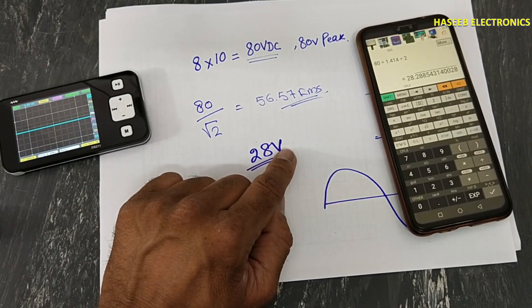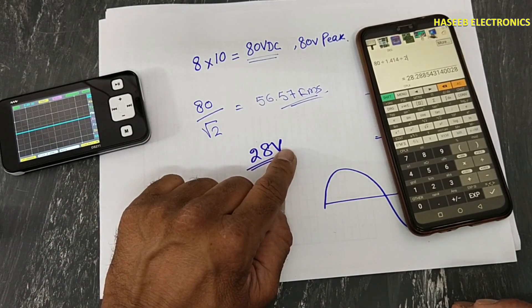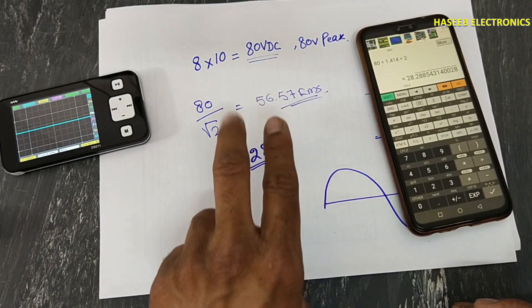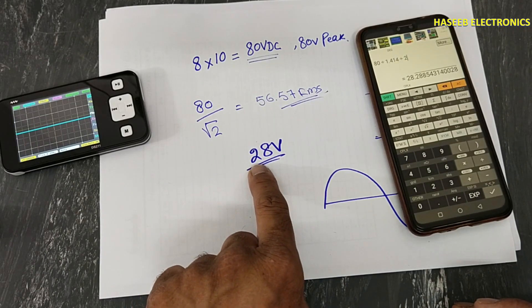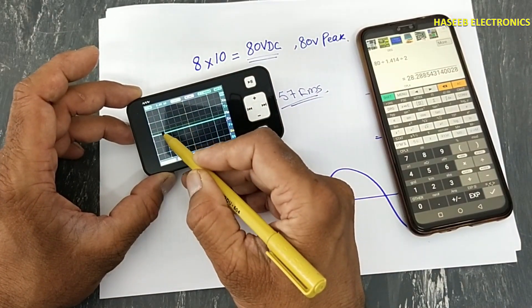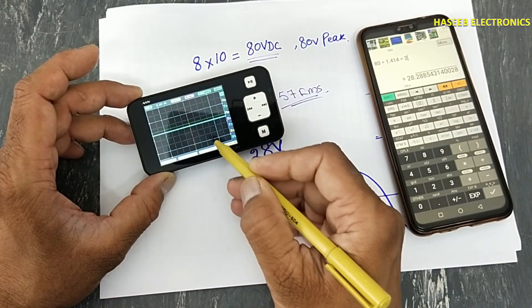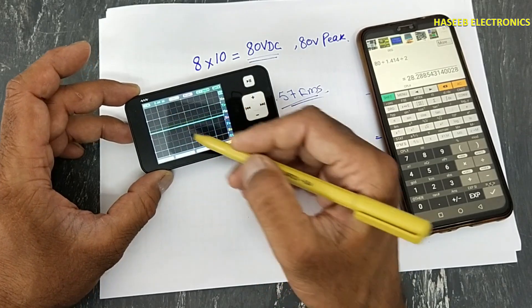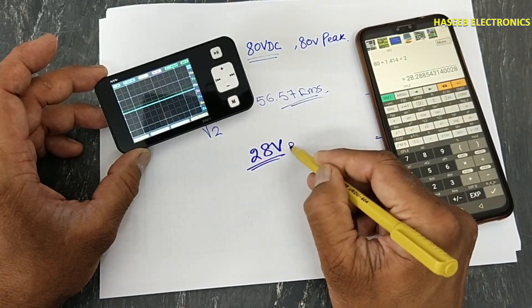Any signal which we measure with multimeter, it has amplitude 28 volts. That signal will be displayed from zero line to upside and bottom. So 28 volts RMS signal will be displayed from zero line to top and bottom.